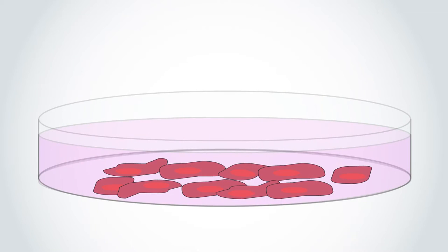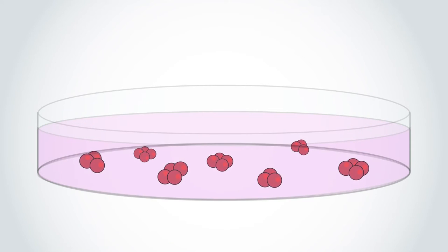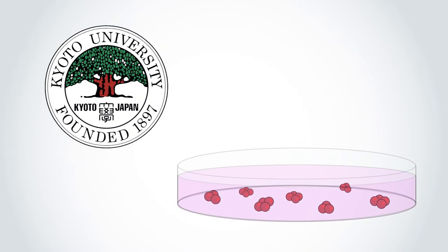That has led scientists to investigate stem cells and whether they can be coaxed into pumping out insulin. The task has been difficult, but by turning to a 3D culture system, biologists from Kyoto University discovered a three-step process that's surprisingly efficient.